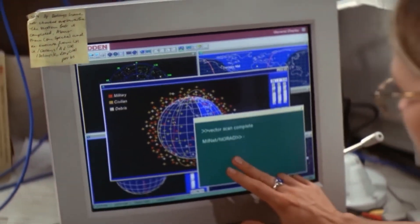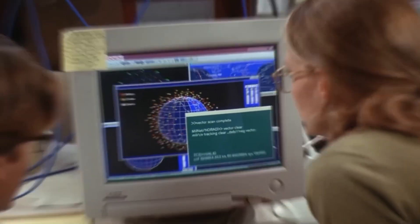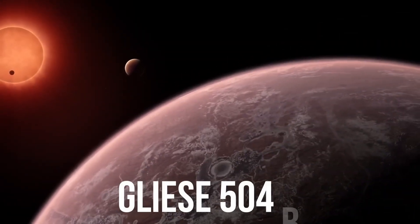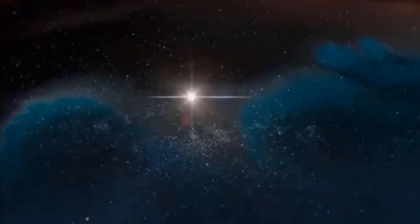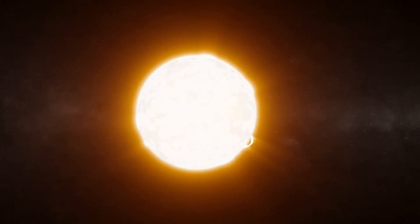What sets Betelgeuse apart from other stars is its distinct and intricate pulsation cycle, characterized by a 400-day rhythm. Astronomers have meticulously tracked these variations in brightness and surface motions for over two centuries.